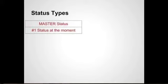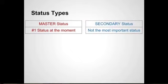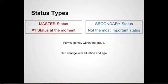There's a master status, which is the number one status at any given moment, and a secondary status, which is not the most important status at the time. These statuses within a group form our identity, and given the situation and our age, these statuses will change throughout our lifetime.